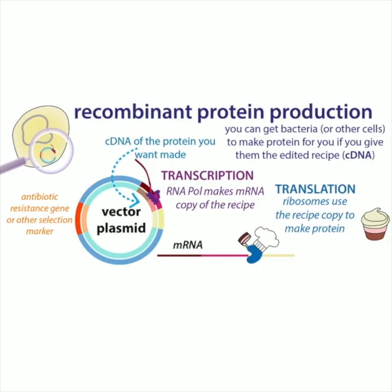You take the genetic recipe for a protein, stick it into a circular piece of DNA called a plasmid, and use that plasmid as a vector or vehicle for putting it into bacterial cells that will make the protein for you. The genetic code is universal, so you can stick the recipe in any type of cell and it should be able to make it. Bacteria are really great because they grow really fast, their food is really cheap, and we can control them really easily genetically.